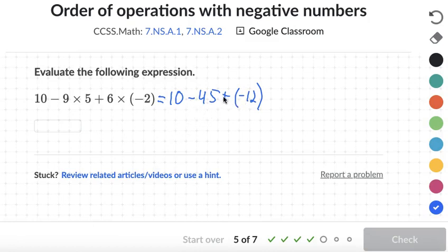OK, so now we have subtraction and addition. We'll do those from left to right. 10 minus 45. Well, it's the same as 10 plus negative 45. We have more negatives than positives. And since the signs are different, we subtract. 45 minus 10 is 35. And it will be negative 35.